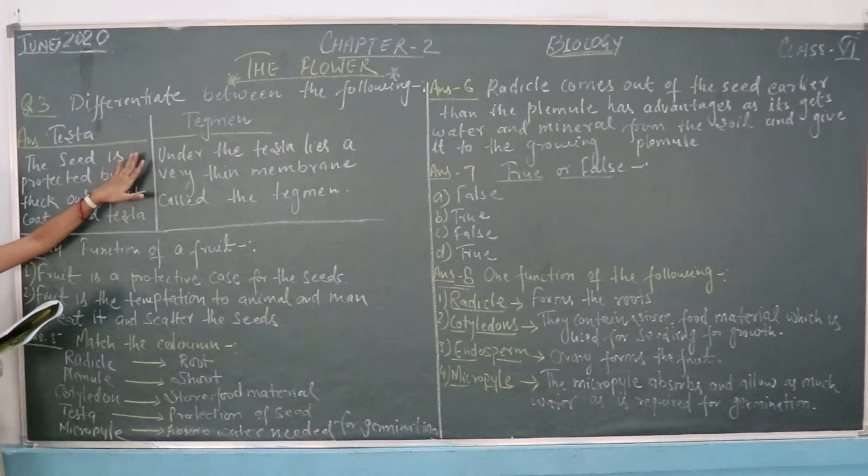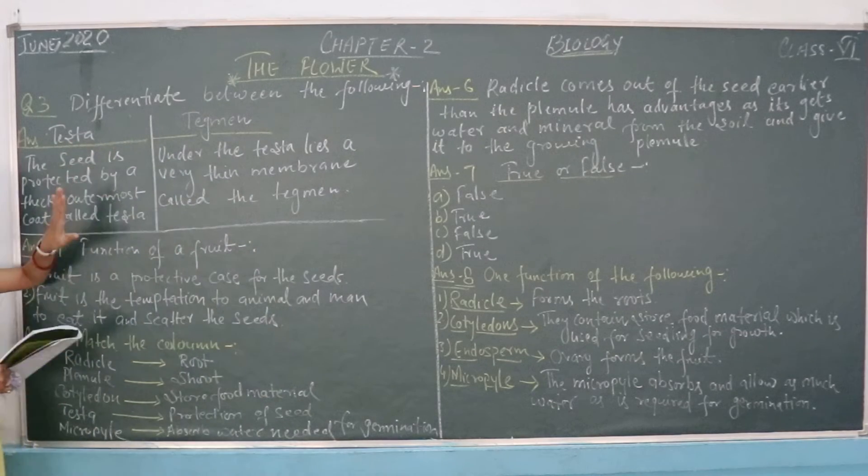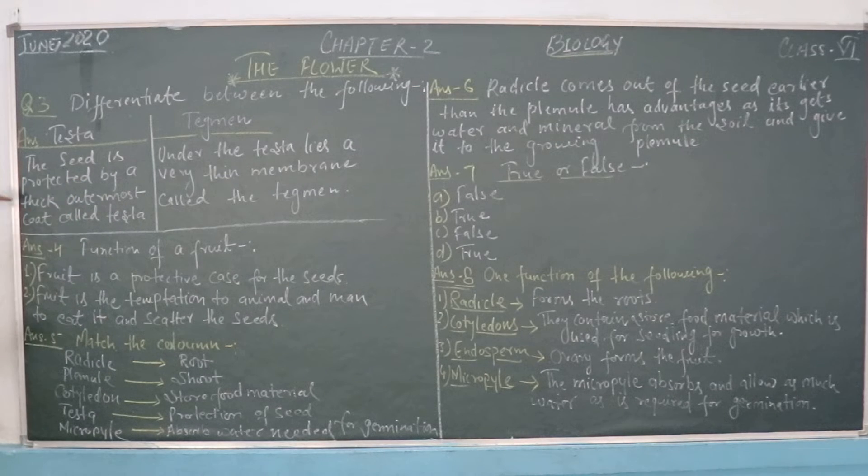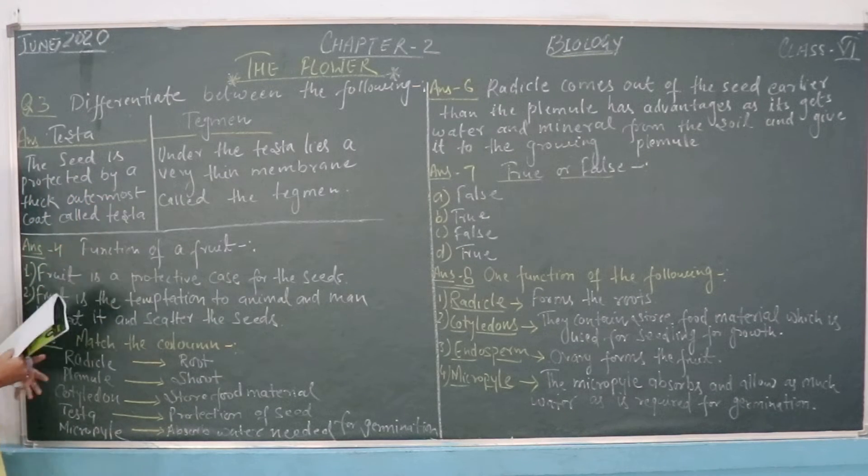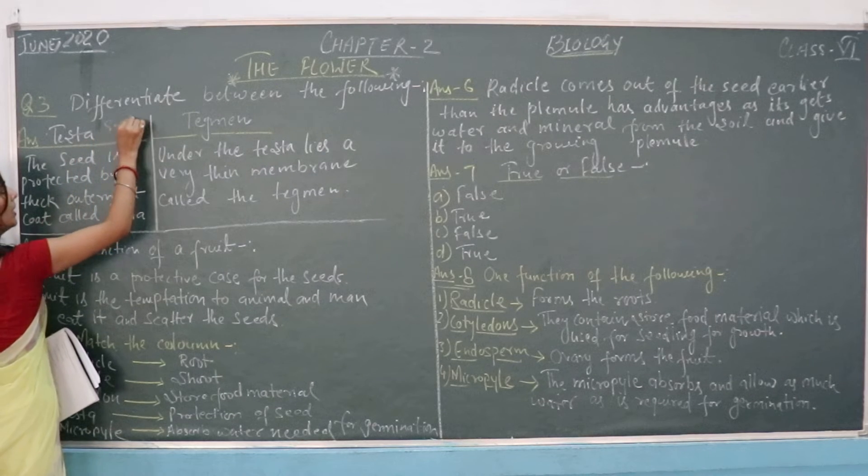Next is the testa and tegmen. The testa is a seed coat. The seed is protected by an outer hard cone called the testa. It is a seed coat.